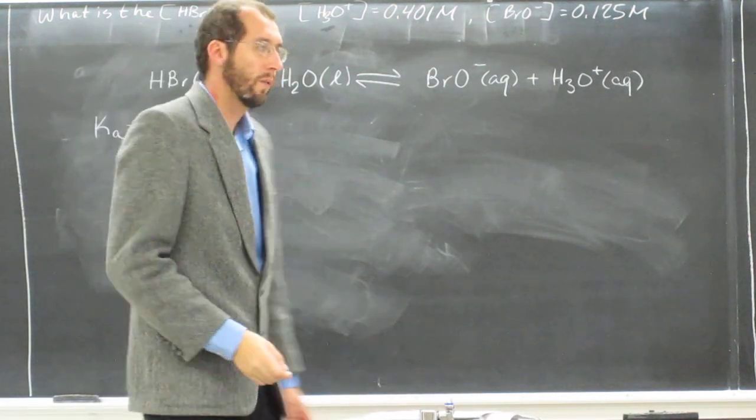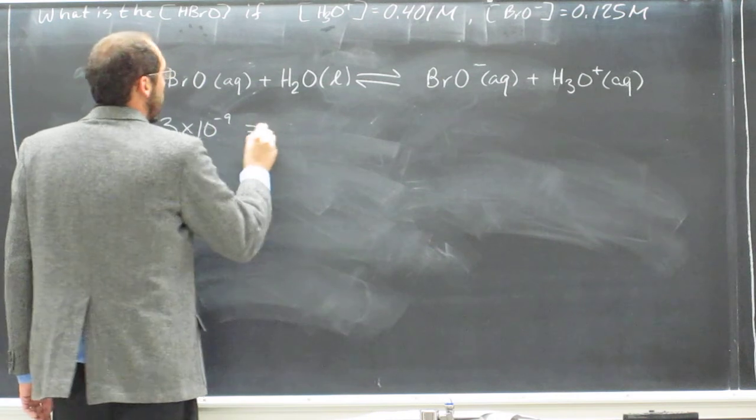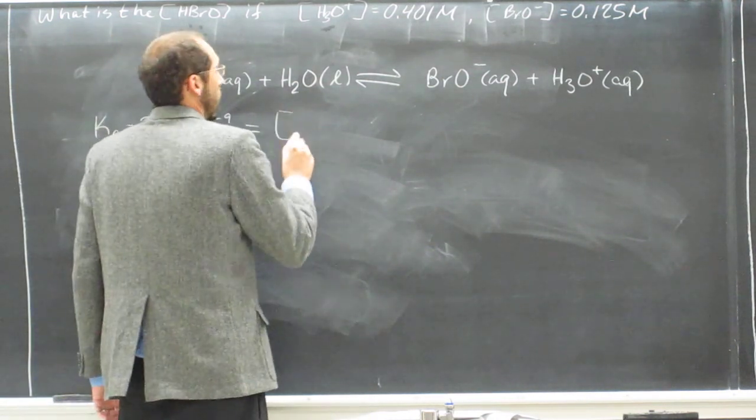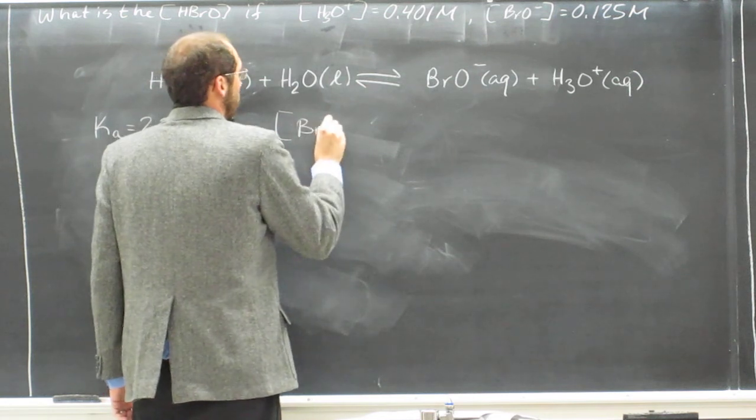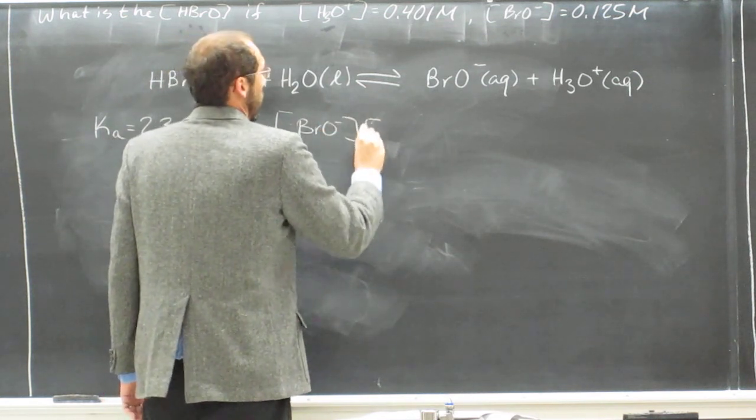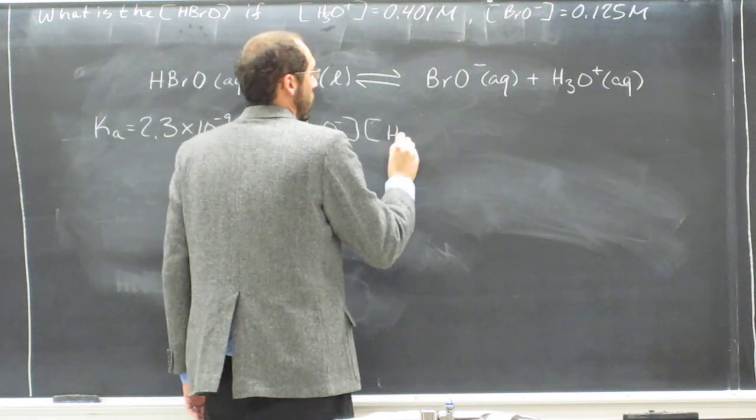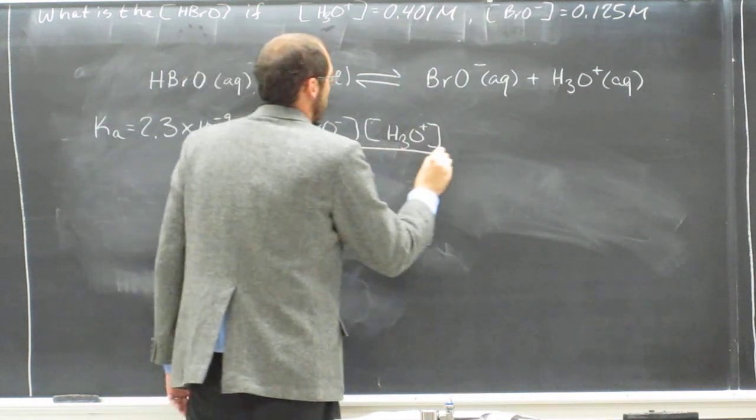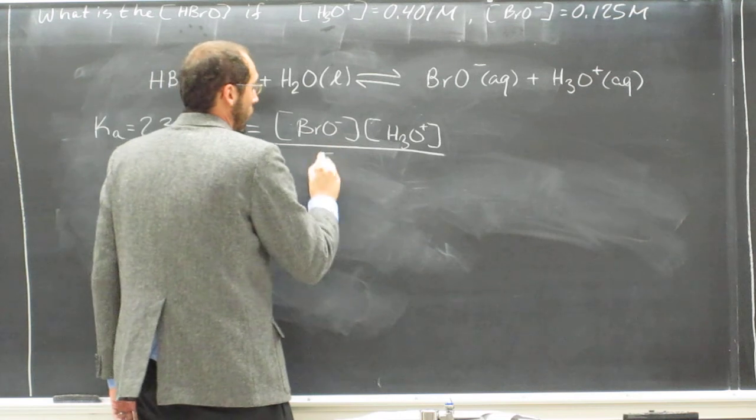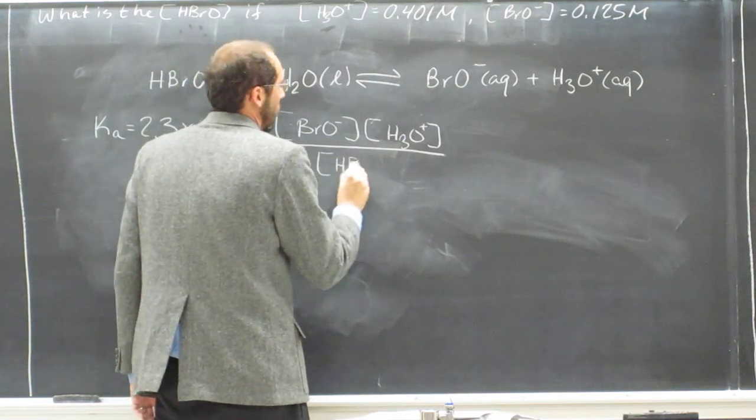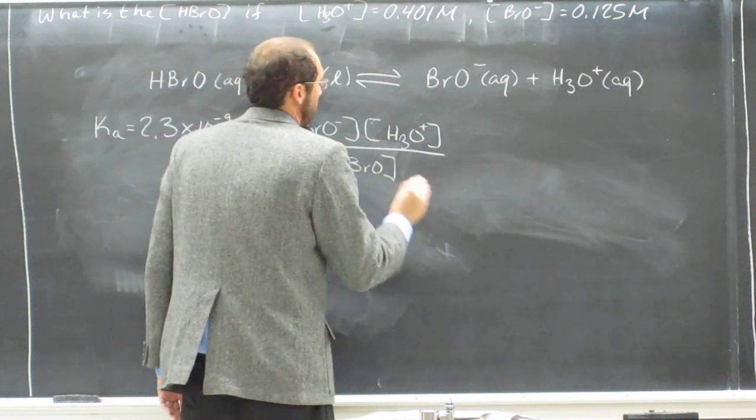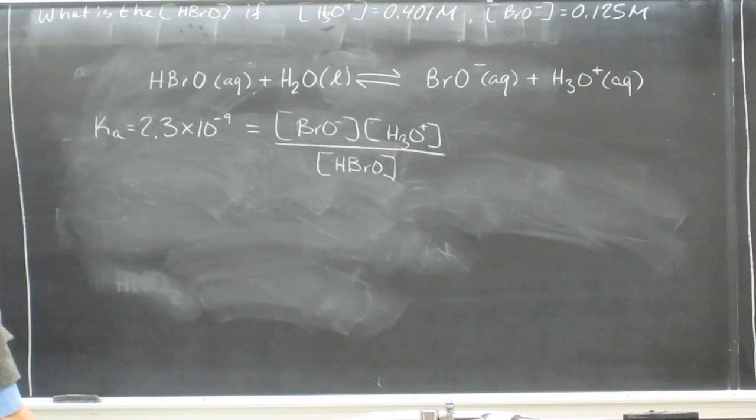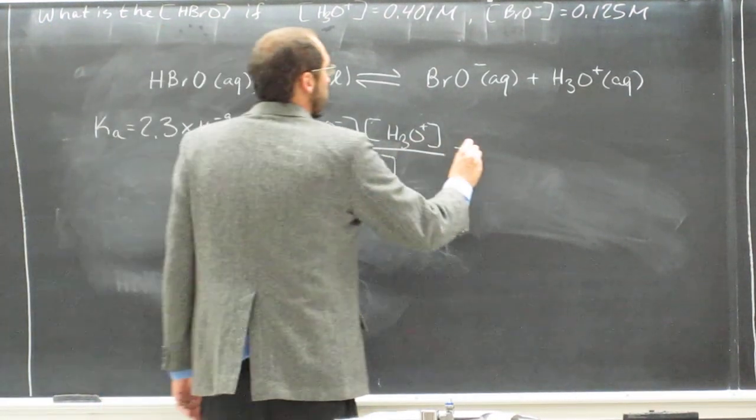And the expression for Ka, remember, is the products over the reactants. So we're going to have the concentration of BrO minus times the concentration of hydronium ion divided by the concentration of hypobromous acid. So that, again, equals Ka.